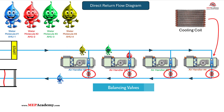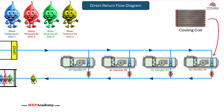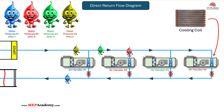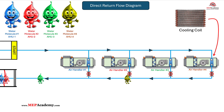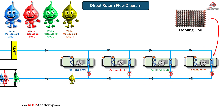This is why balancing valves are often added to create additional pressure drops to equalize each piping circuit. Direct return is often considered simpler and more cost-effective to install, as it requires less pipe and can be laid out with fewer complex fittings. The layout can differ with all coils in a straight line, as shown in this piping diagram, which makes it easier to see how this works.